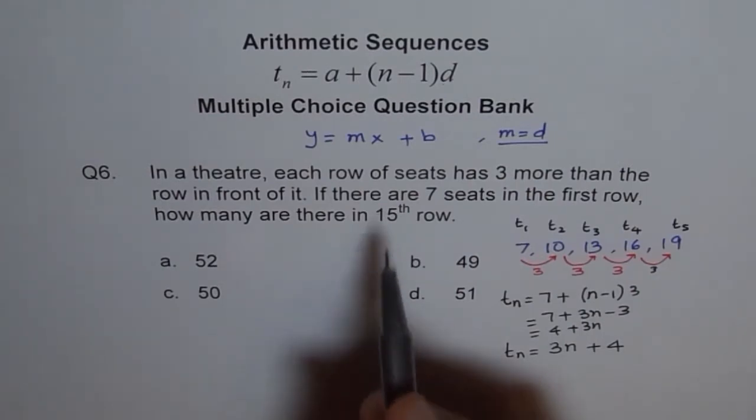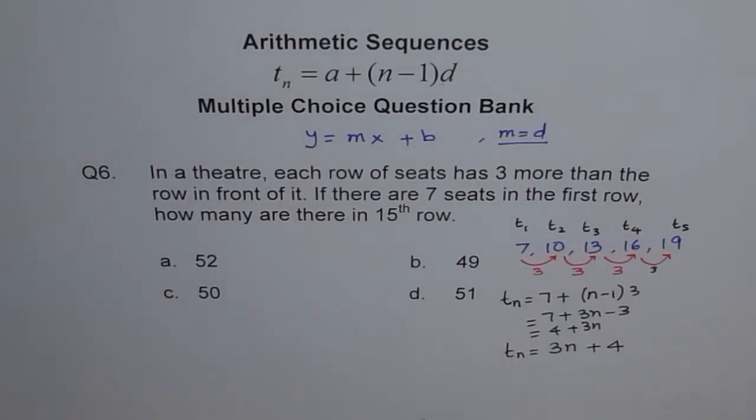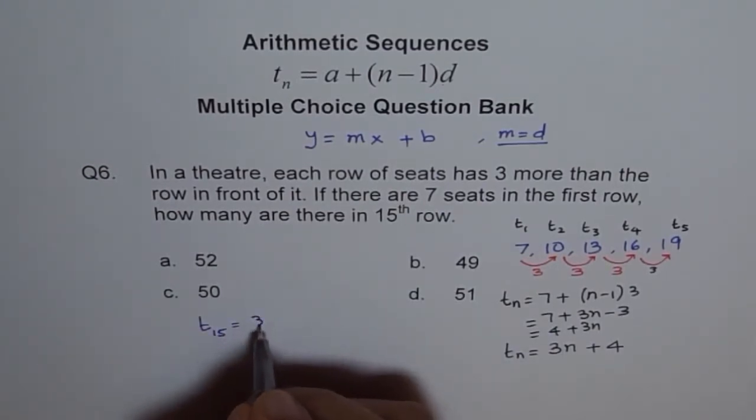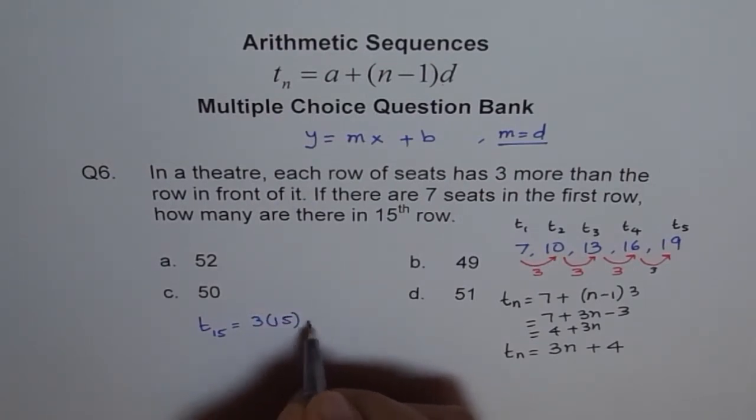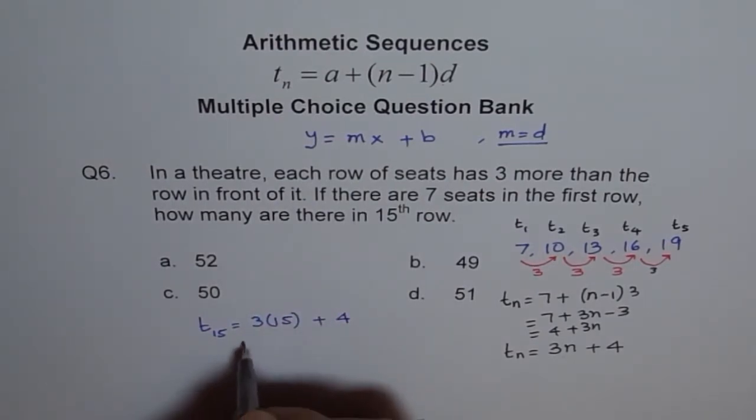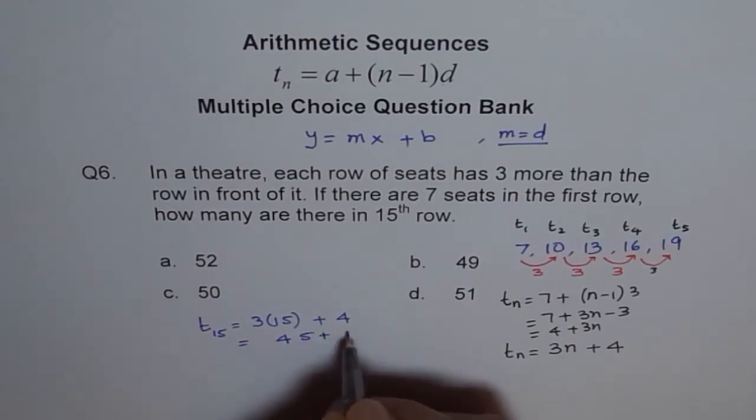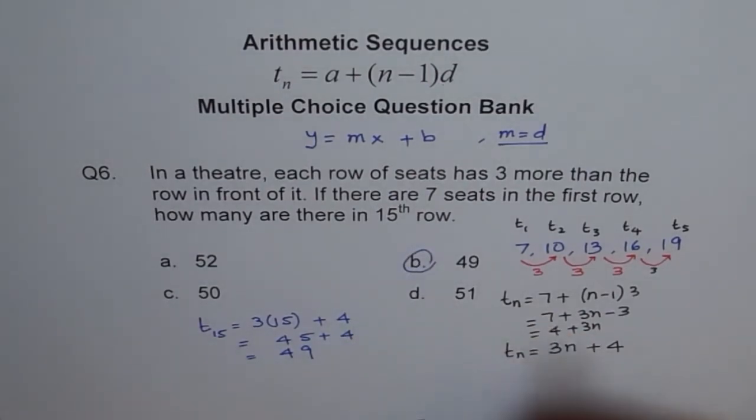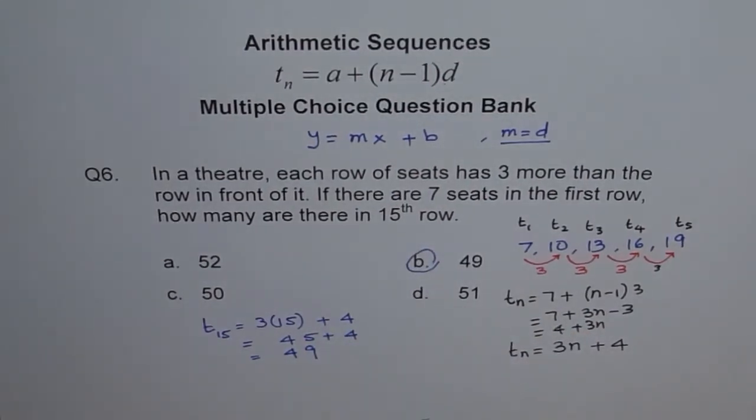Now, let us find 15th term. So for 15th term we can use the formula. So T15 equals to 3 times 15 plus 4. 3 times 15 is 45 plus 4, which is 49. Do we have 49? Yes, we do. That is your answer. Do you see? How we can get our answer so easily with the formula.